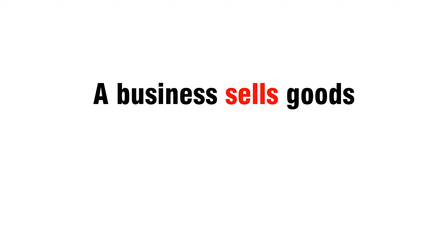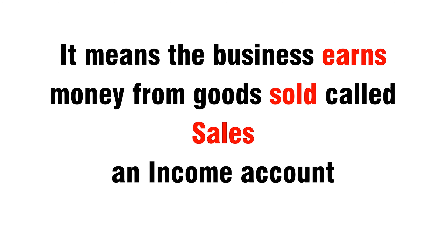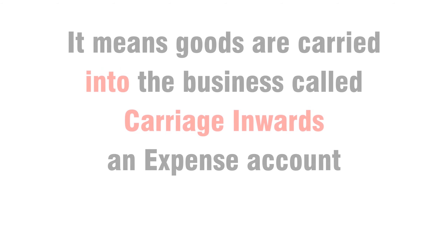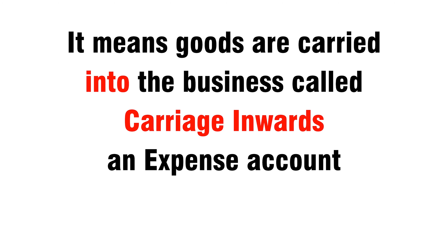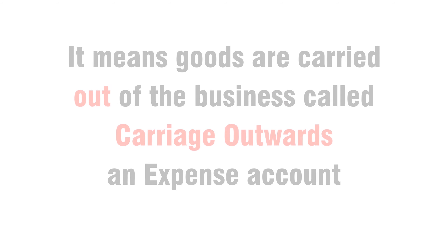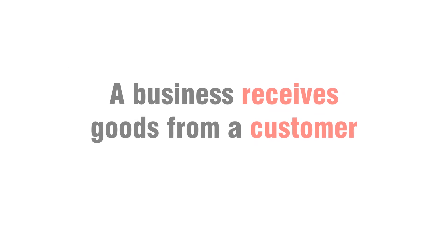A business sells goods — it means the business earns money from goods sold, called sales, an income account. A business transports purchased goods — it means goods are carried into the business, called carriage inwards, an expense account. A business transports sold goods — it means goods are carried out of the business, called carriage outwards, an expense account.